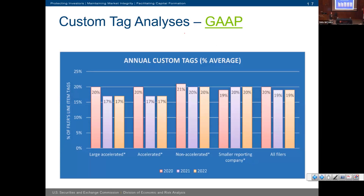We also look at custom tag analysis. Interactive data rules do allow filers to create custom tags, but only in very specific circumstances — when a transaction or disclosure is unique enough that no standard tag exists. We've seen filers creating custom tags for property, plant, and equipment, which is a very standard disclosure and one that both the GAAP and IFRS taxonomies already have tags for. Looking at custom tag rates for GAAP filers, it's been pretty consistent at around 19–20 percent depending on filer size. A slight uptick sometimes occurs when a new accounting standard introduces new tags that filers haven't adopted yet, but rates have been improving — back in 2016–2017 we were starting at 20–23 percent.